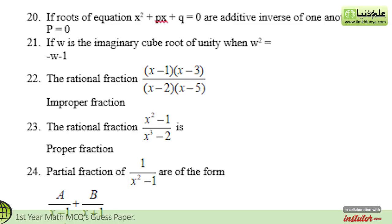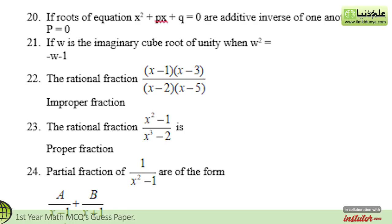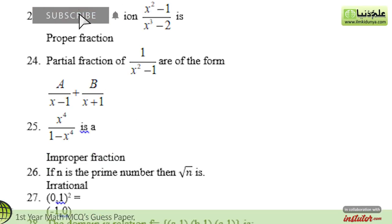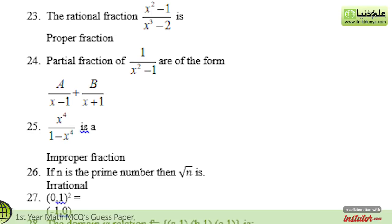The nineteenth statement is: the degree of a constant polynomial is — the correct option is 0. The twentieth statement is: the roots of equation x² + px + q = 0 are additive inverses of each other — the correct option is p equals 0. The twenty-first statement is: if ω is the imaginary cube root of unity and ω² — the correct option is −ω − 1. The twenty-second statement is: the rational fraction (x−1)(x−3) divided by (x−2)(x−5) — the correct option is an improper fraction. The twenty-third statement is: the rational fraction (x²−1) divided by (x³−2) — the correct option is a proper fraction. The twenty-fourth statement is: partial fractions of 1 divided by (x²−1) are of the form — the correct option is A/(x−1) plus B/(x+1).